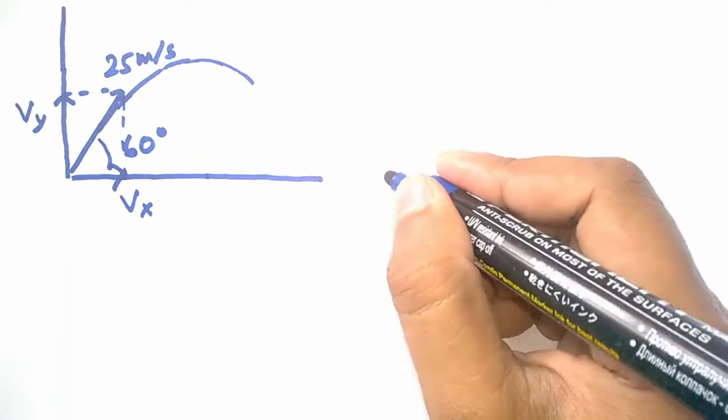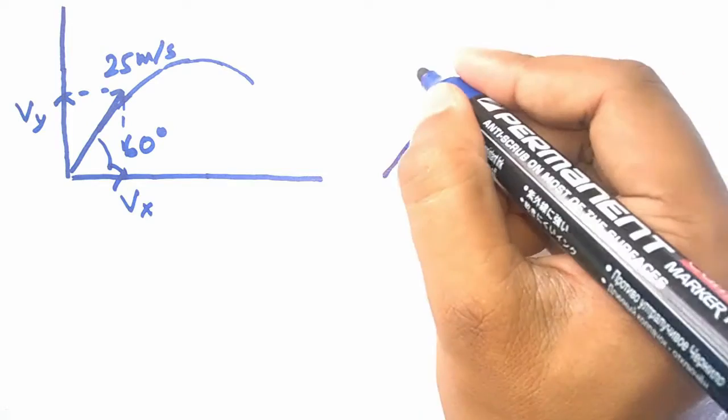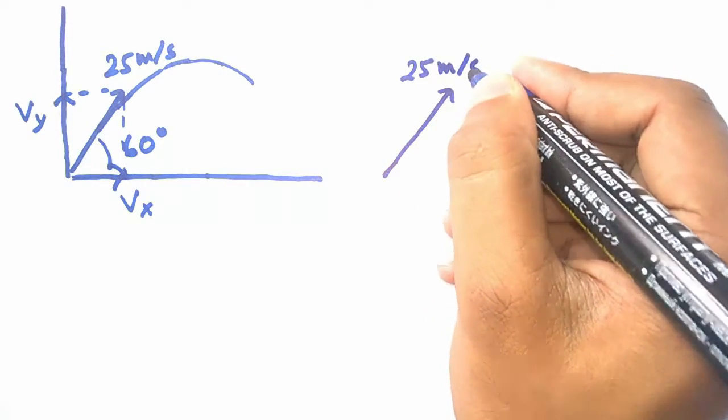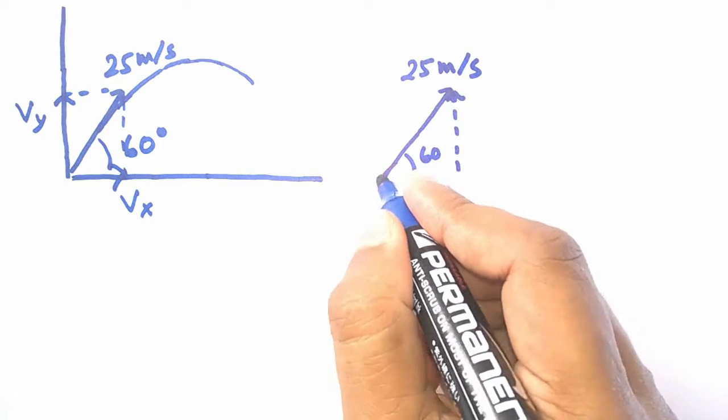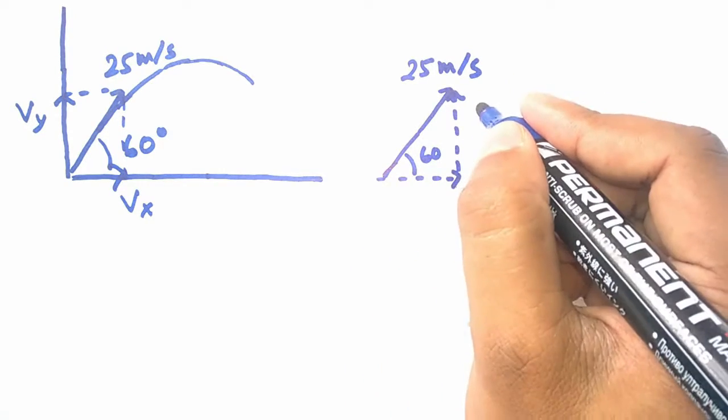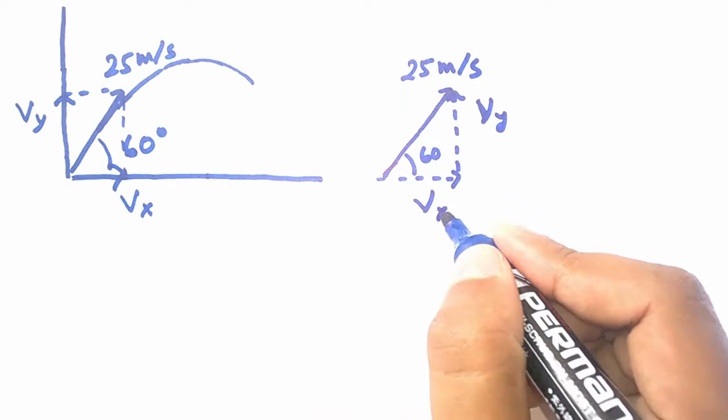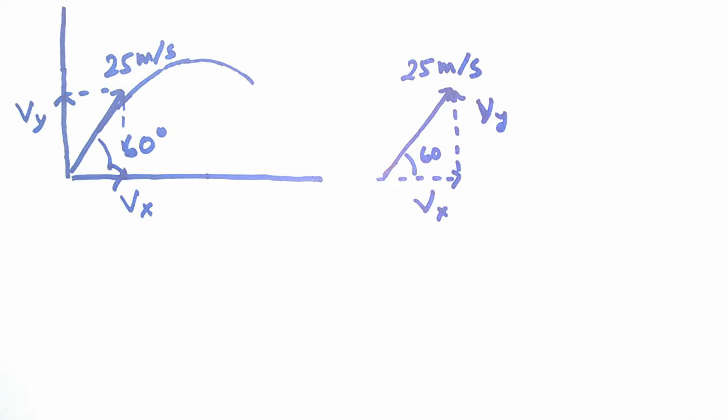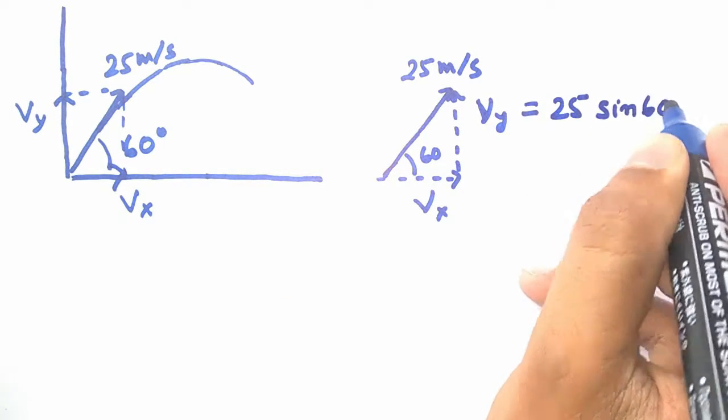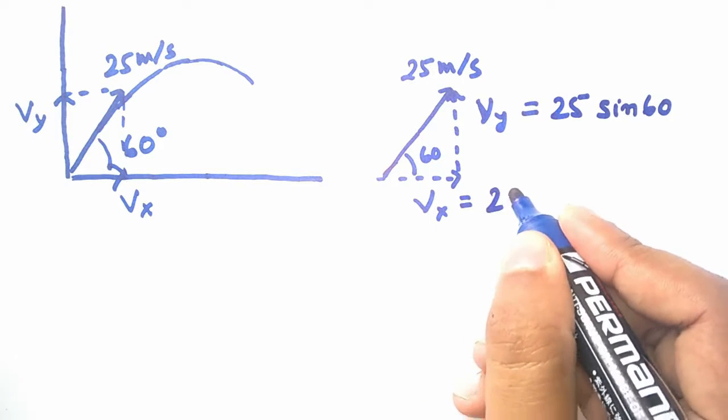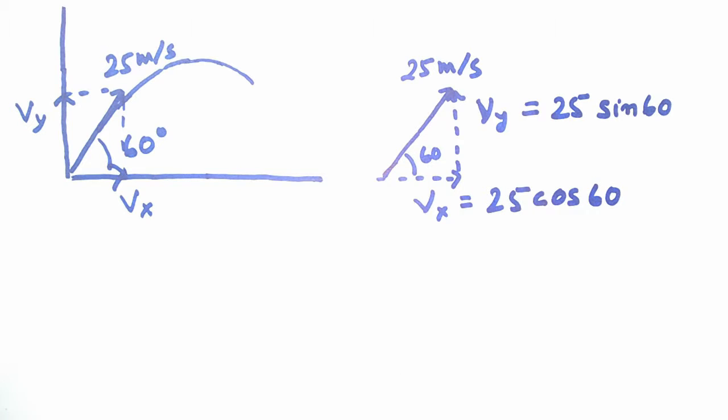Now, to get the value of these components, if you remember my last video, you might have already guessed that we need to draw a right angle triangle with an angle of 60 degrees. If the hypotenuse of that triangle is representing the velocity along the direction which is 60 degrees from the horizontal, the perpendicular of that triangle will be the vertical component and the base will be the horizontal component.